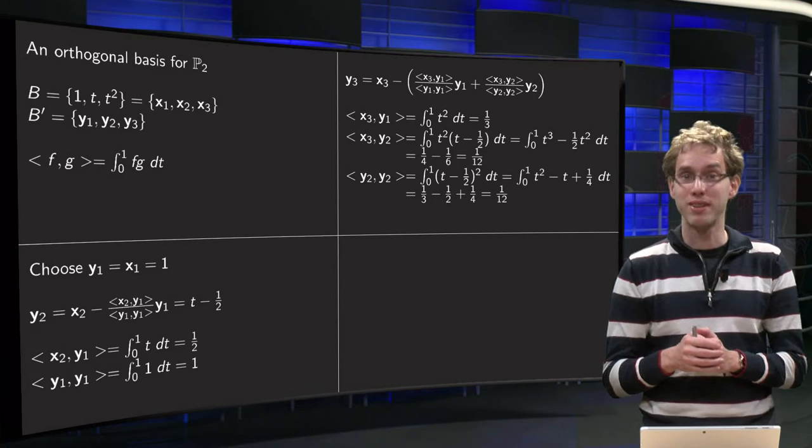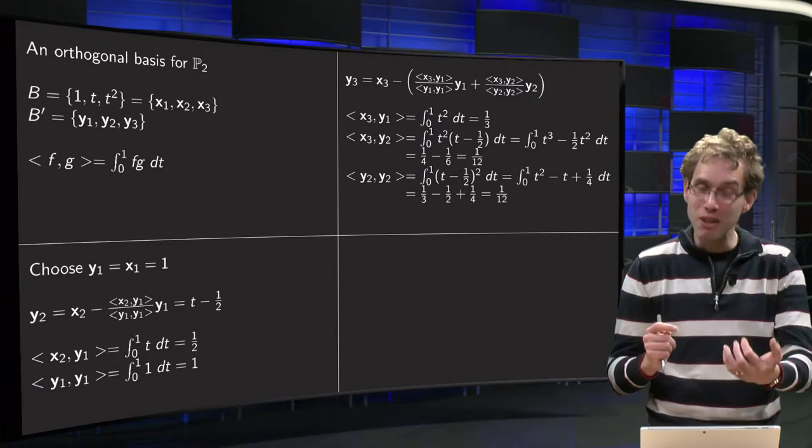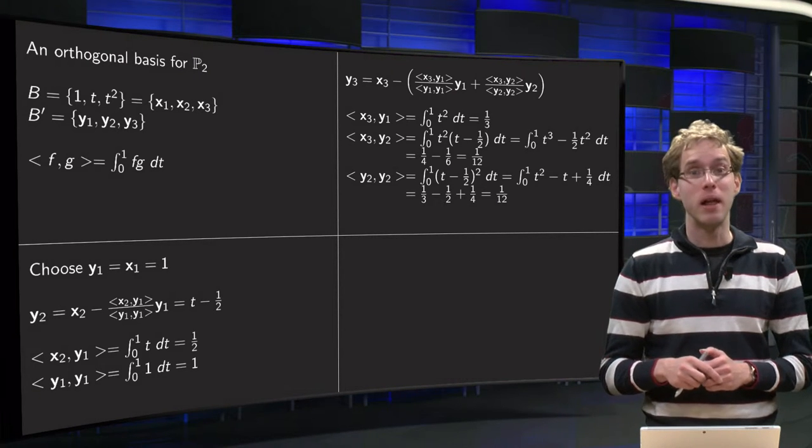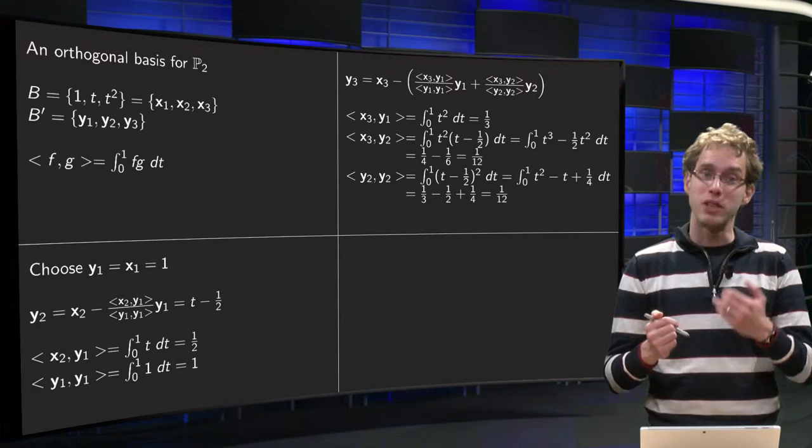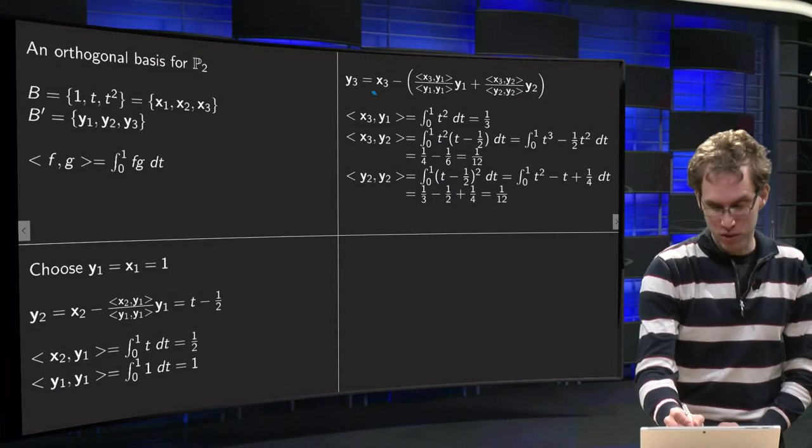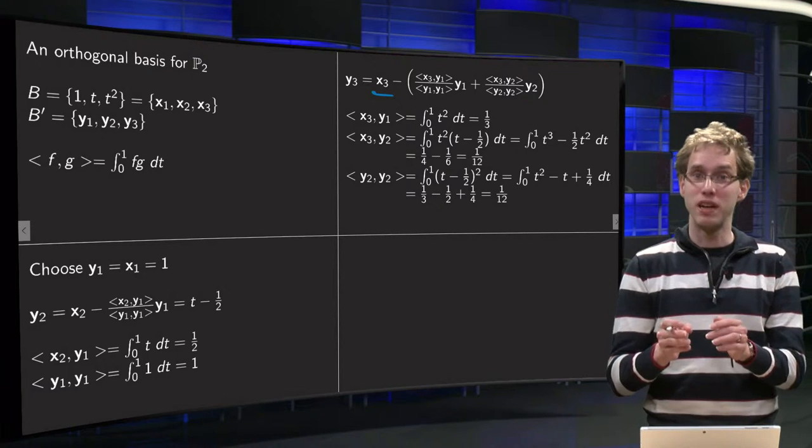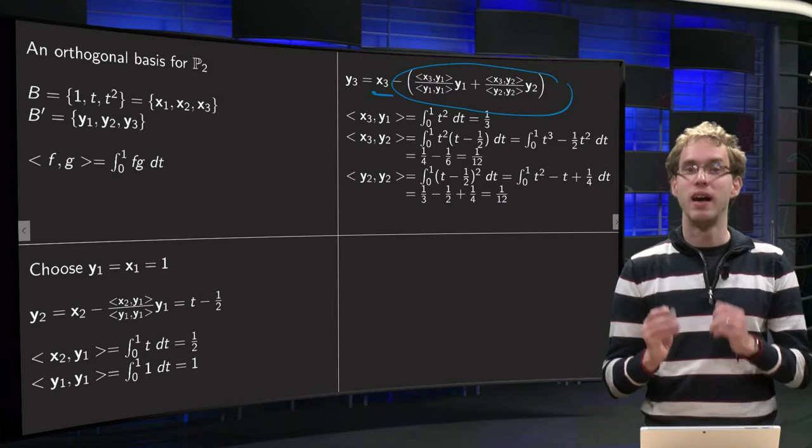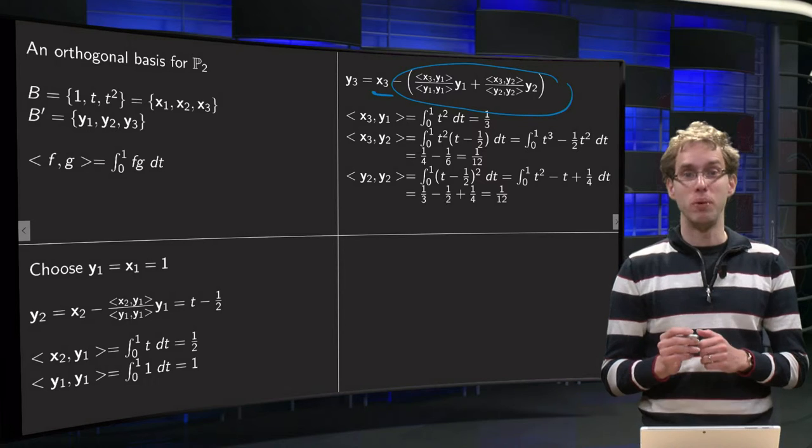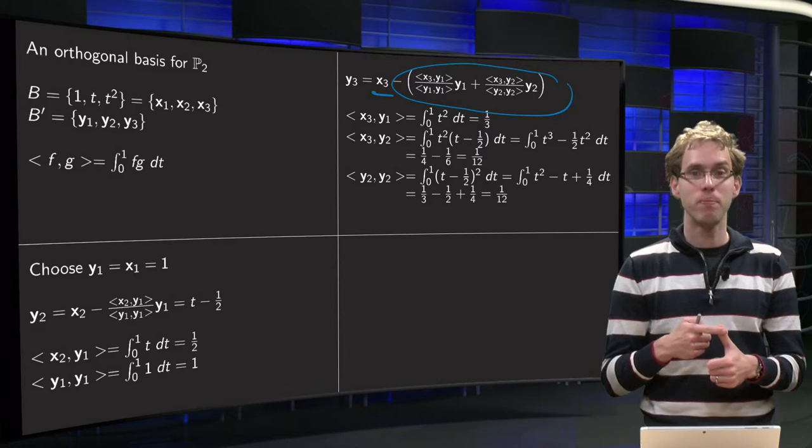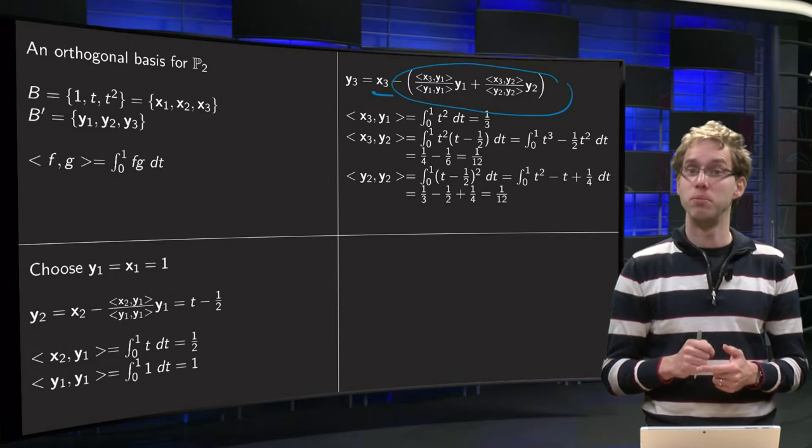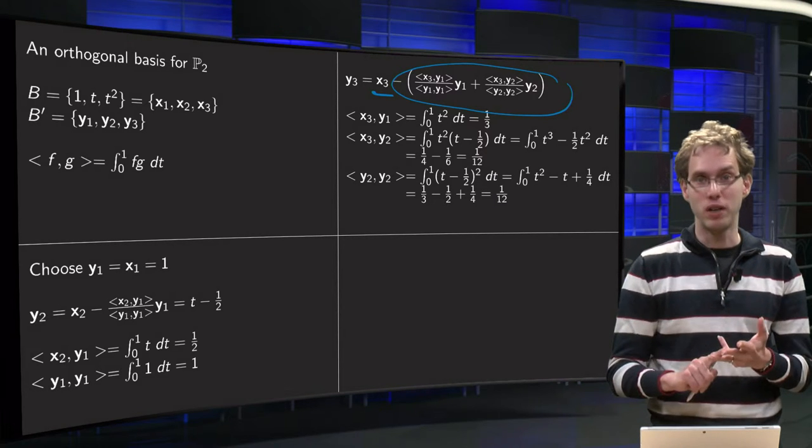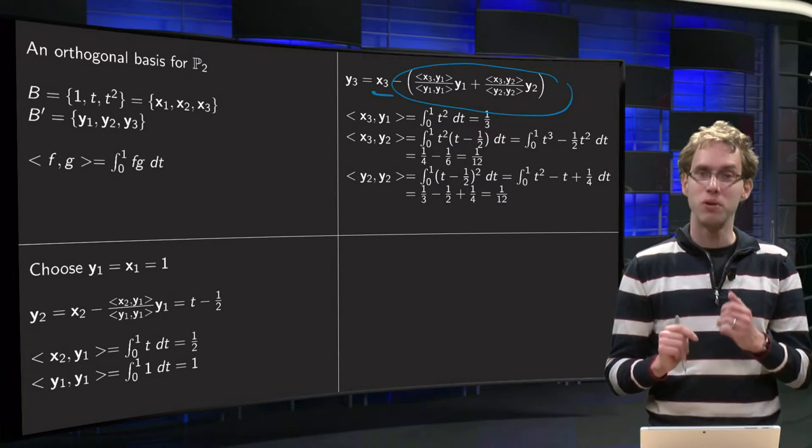Because if we go on to find y3, we need the y2 which we found in the previous step. Just as this is the Gram-Schmidt process with vectors in the Rn. How do we find our y3? Well, y3 equals x3 minus the projection of x3 on our previous vectors, so minus the projection of x3 on y1 and y2. So we need quite some inner products here: x3, y1, y1, y1. We already had that one in the previous step. We need x3, y2, and y2, y2. So we need 4 inner products, we had already 1, so 3 left.